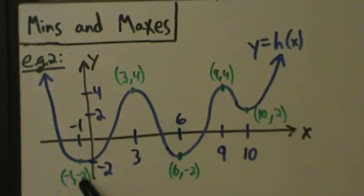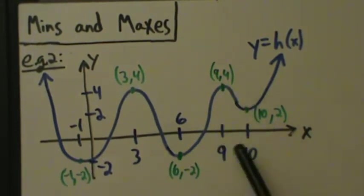So here, negative 1 comma negative 2, 3 comma 4, 6 comma negative 2, 9 comma 4, and 10 comma 2. So as usual, not to scale, but it doesn't really matter.